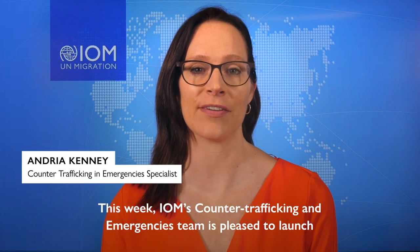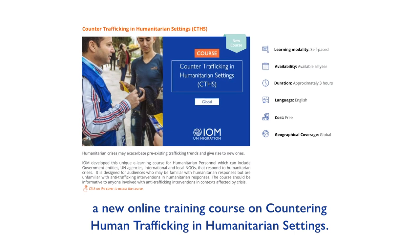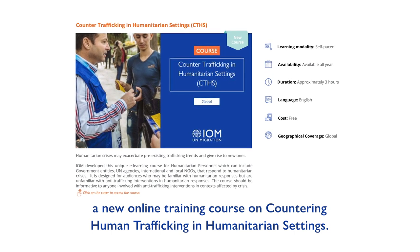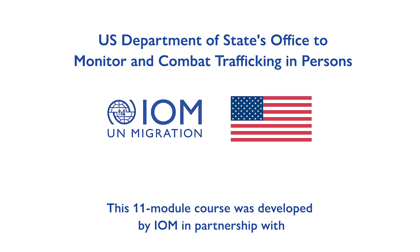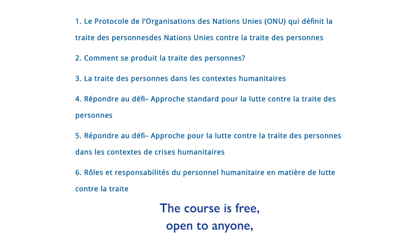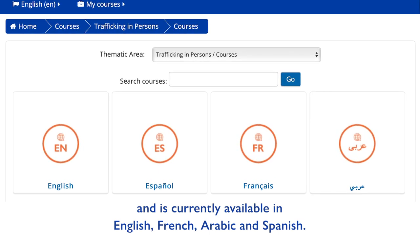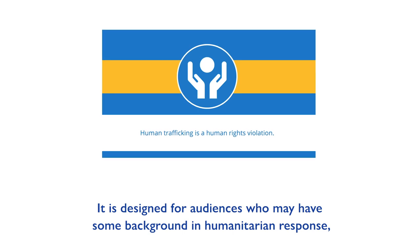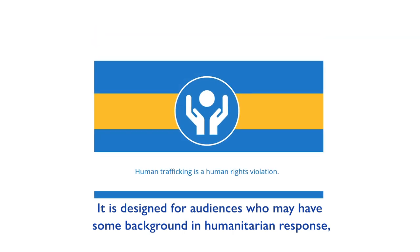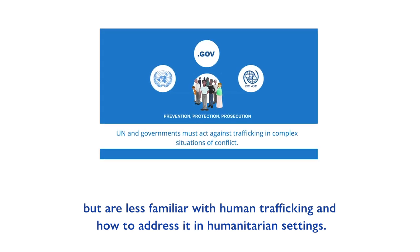This week, IOM's Counter-Trafficking in Emergencies team is pleased to launch a new online training course on countering human trafficking in humanitarian settings. This 11-module course was developed by IOM in partnership with the U.S. Department of State's Office to Monitor and Combat Trafficking in Persons. The course is free, open to anyone, and is currently available in English, French, Arabic, and Spanish. It is designed for audiences who may have some background in humanitarian response but are less familiar with human trafficking and how to address it in humanitarian settings.